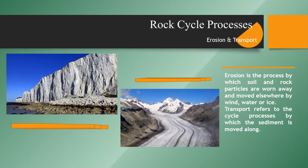Erosion and transport. Erosion is the process by which soil and rock particles are worn away and moved elsewhere by wind, water, or ice. Remember, weathering involves no moving agent of transport. Transport refers to the cycle processes by which sediment is moved along — for example, pebbles rolled along a river bed or seashore, sand grains whipped up by the wind, and salts carried in solution.